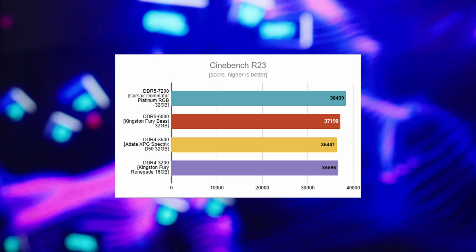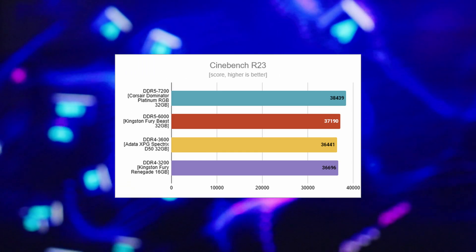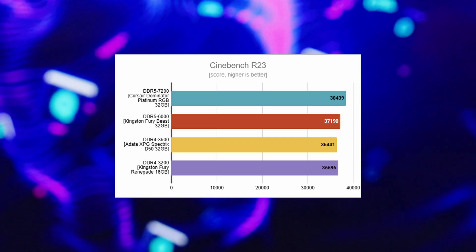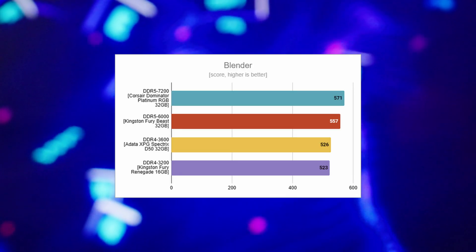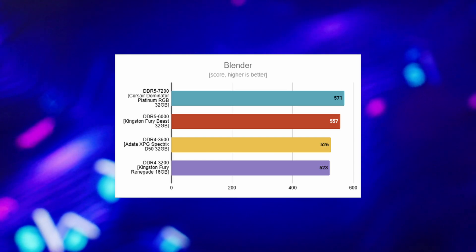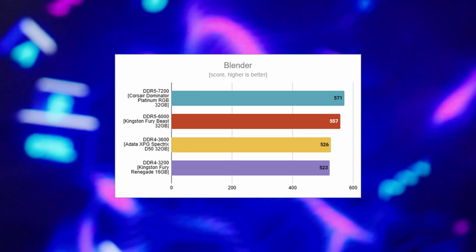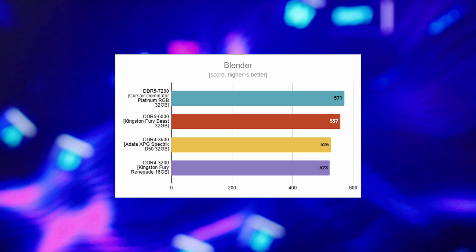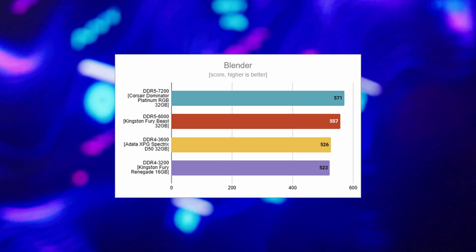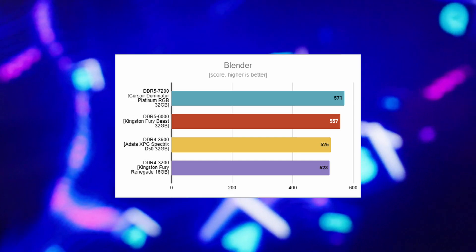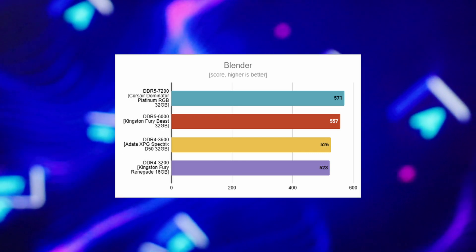Starting with Cinebench R23, the results for the two DDR4 kits and the DDR5-6000 were roughly the same and within the margin of error. Only the high-end DDR5-7200 showed a small improvement. In this benchmark, upgrading to DDR5 only led to a performance increase of between 1 and 5%. In Blender the results were relatively similar — differences between the two DDR4 kits were insignificant, as were differences between the two DDR5 kits. Going from DDR4-3200 to DDR5-6000 led to about 6.5% improvement, while going from DDR4-3600 to DDR5-7200 meant roughly 8.5% improvement.